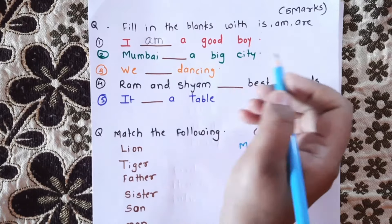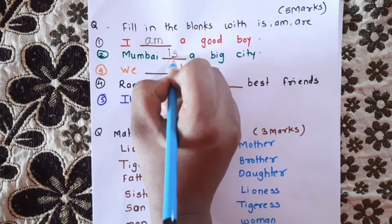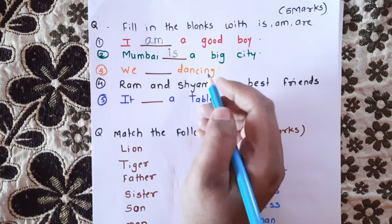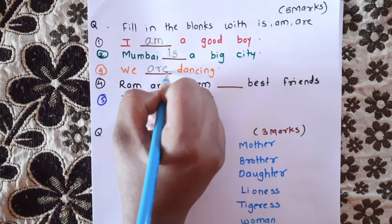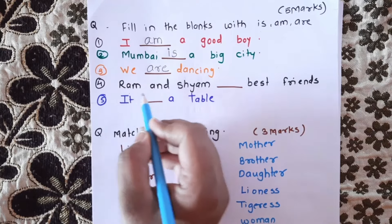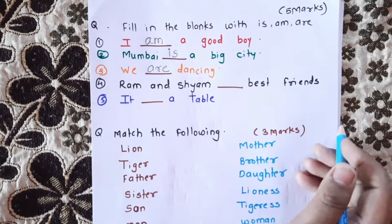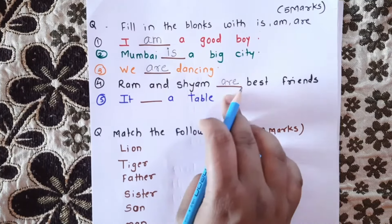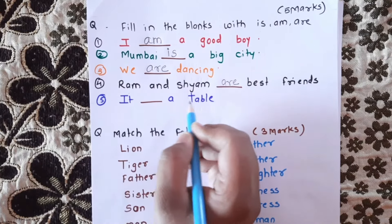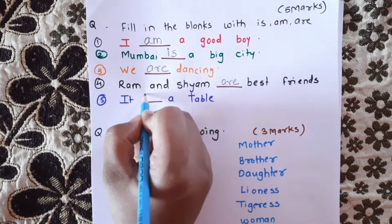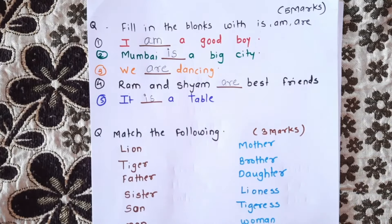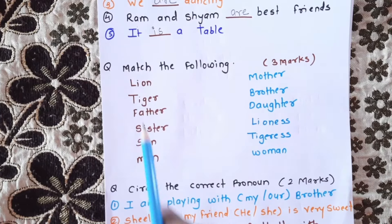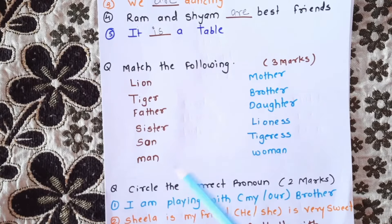Next: Mumbai is a big city — use 'is'. We are dancing — use 'are' for 'we', 'you', 'they', and plural. It is a table — use 'is'. The right option carries 3 marks, half mark each.